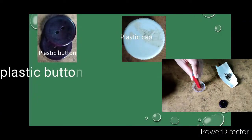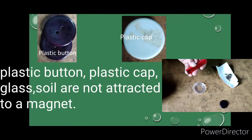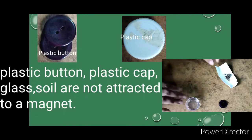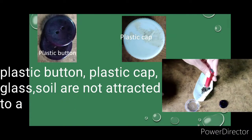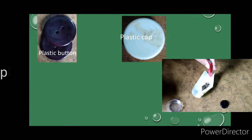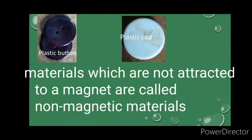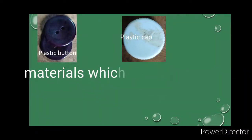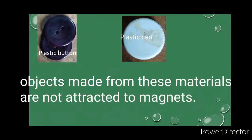But some materials like plastic button, plastic cap, glass, soil, and paper are not attracted to magnets. Materials which are not attracted to magnets are called non-magnetic materials, and objects made from these materials are not attracted to magnets.